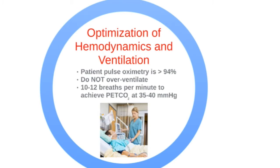Oxygen should never be titrated so that patient pulse oximetry is less than 94%, to avoid oxygen toxicity. Don't over-ventilate, and keep the rates between 10-12 breaths per minute. IV fluids and vasoactive medications should be titrated as warranted.